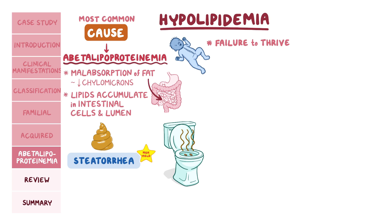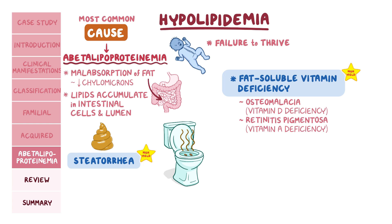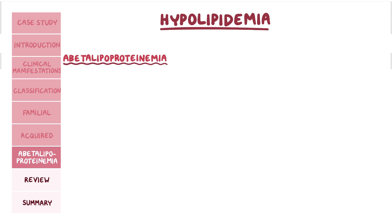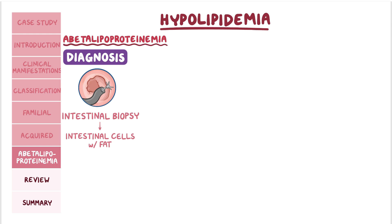Over time, individuals develop signs and symptoms of fat-soluble vitamin deficiency, and this is another high-yield fact. This includes osteomalacia from vitamin D deficiency, retinitis pigmentosa from vitamin A deficiency, as well as spinocerebellar degeneration and acanthocytosis on peripheral blood smear from vitamin E deficiency. To confirm the diagnosis, an intestinal biopsy is performed, which shows intestinal cells that contain large amounts of fat.